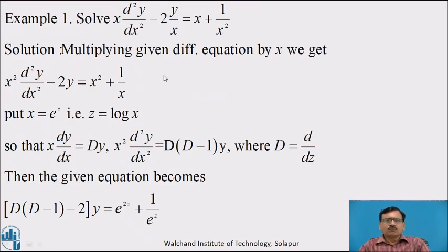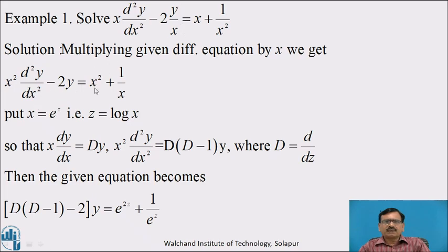We will solve more different types of examples on homogeneous equations. Example 1: Solve x d squared y by dx squared minus 2y by x equal to x plus 1 by x squared. If you look at this equation, it is not homogeneous — it does not satisfy the definition of a homogeneous equation. To get a homogeneous equation, multiply both sides by x. We get x squared d squared y by dx squared minus 2y equal to x squared plus 1 by x. Clearly, the equation is now reduced to a homogeneous linear equation.